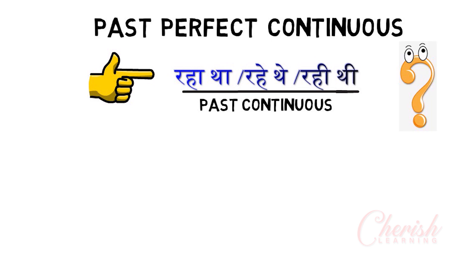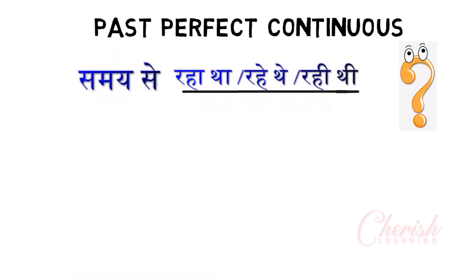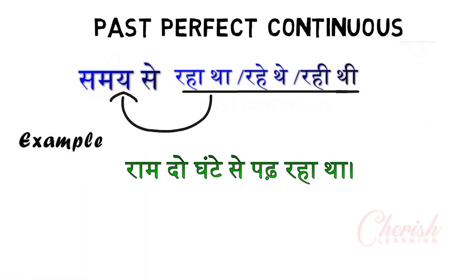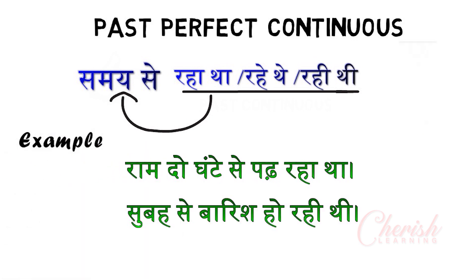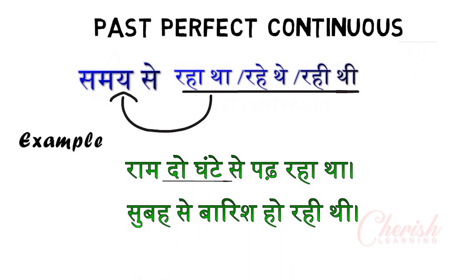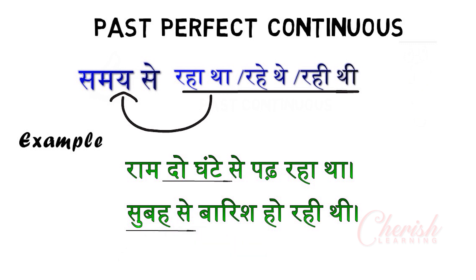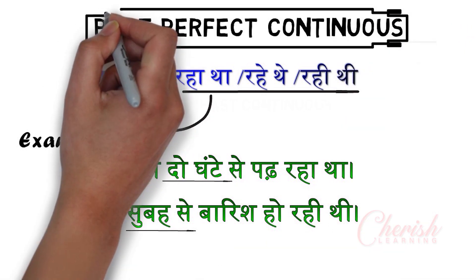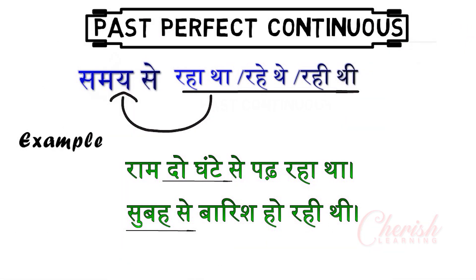So what is the difference between both tenses? The difference between the past perfect continuous tense and the past continuous tense is the difference in time. For example, Ram was studying for 2 hours, and it was raining in the morning. The time is known — 2 hours. In the next sentence, it was raining in the morning, so the time is also known. These are past perfect continuous tense examples.